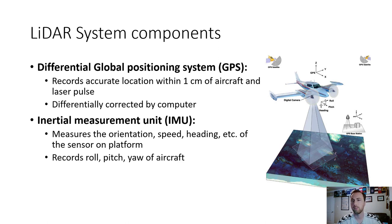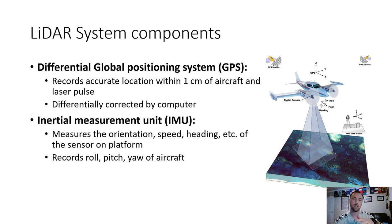LiDAR measurements are often off-nadir, meaning they are aimed some degrees off a right angle rather than directly below. The IMU corrects for those angular differences and also measures the actual flight path of the aircraft — whether it is banking left or right, pitching up or down — and uses those recorded measurements to correct all the dimensional data taken from the rangefinder.